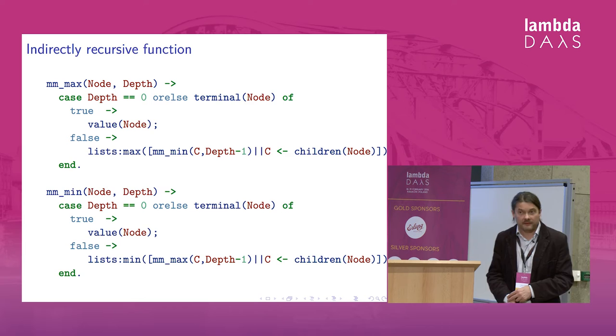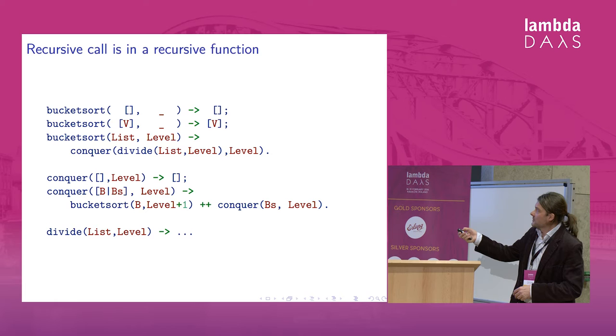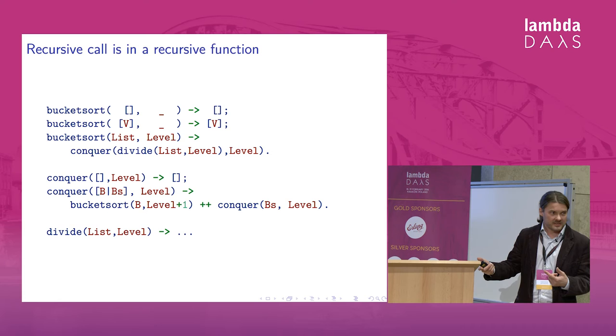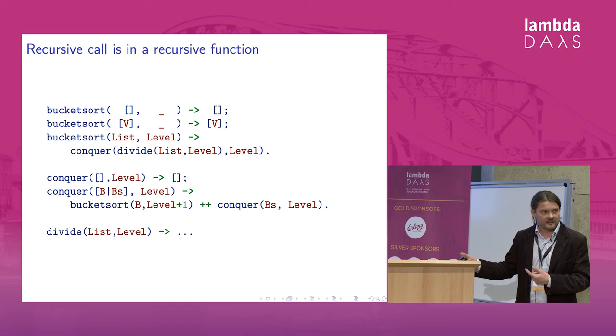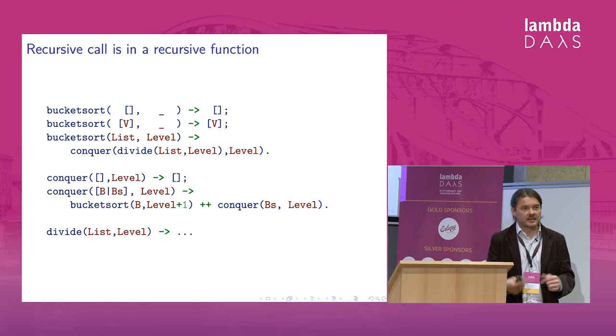Or you can have another structure. You have a bucket sort here. This bucket sort calls conquer, and then conquer calls bucket sort, plus it calls itself recursively. And this recursive call will call again bucket sort, and again, and again, and again. So actually, if you investigate what happens here, it's the same. You have a function, bucket sort, which calls itself repeatedly with independent parameters.